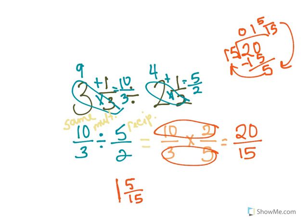Of course, I'm not done. Why? Because I can simplify this. I can divide five and fifteen by five. So that's going to make my answer one and one-third.